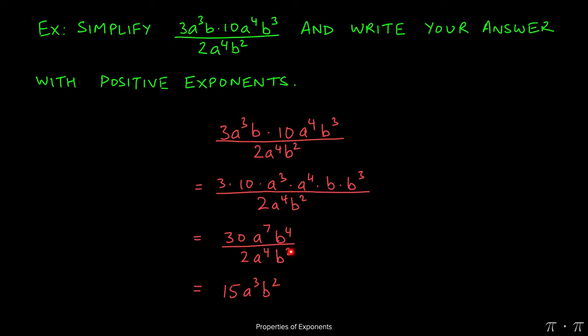b to the fourth over b squared. Again, the quotient rule applies. The bases are same, and we're dividing, so 4 minus the 2 gives us 2.